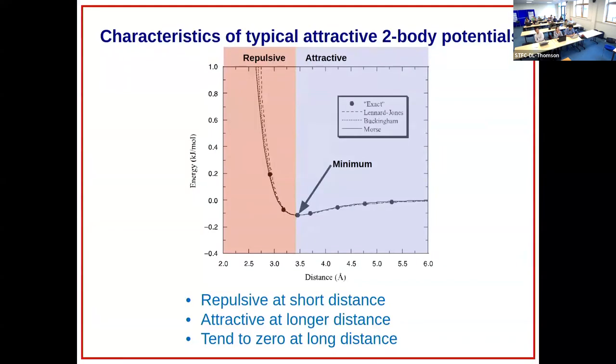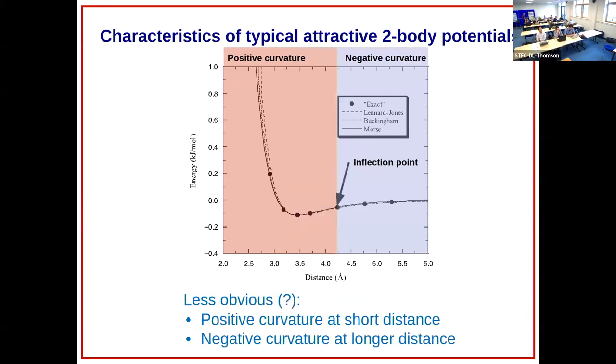If you look at this family of traditional two-body potentials, essentially many of them share this property: you have a short range repulsive behavior and then a long range that tends to zero, with an attractive region somewhere in between. You can think about them as being repulsive and then attractive. In terms of the curvature, you can think about them as having a region of positive curvature and a region of negative curvature, separated by an inflection point.